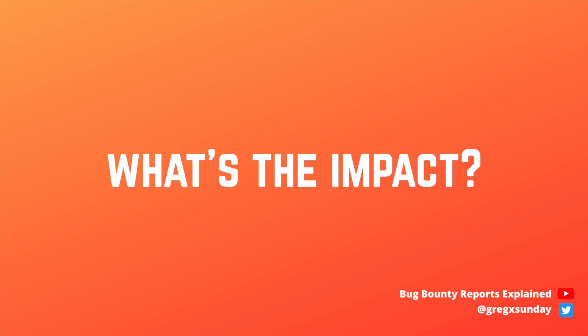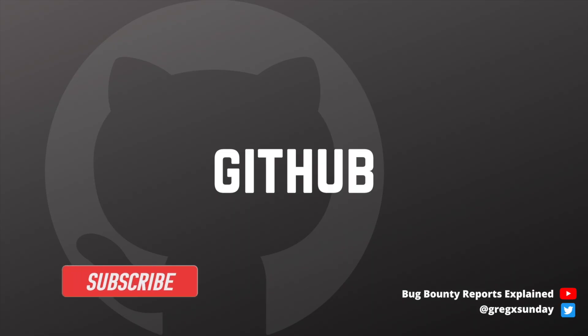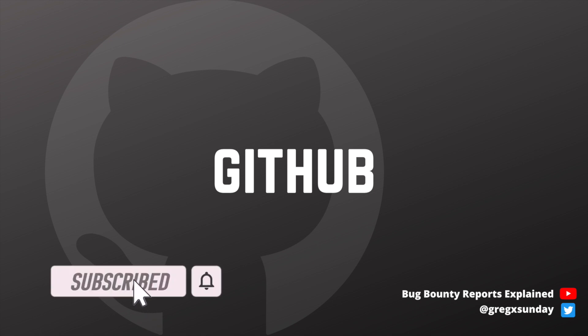But where is the impact, you may ask? The easy way of exploiting such issues is to increase the impact of reflected cross-site scripting or unexploitable XSSes. But more often than not you won't have an XSS, and in such a case you need to get creative. Let's see how James got creative on GitHub's website.